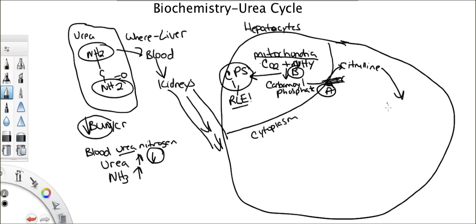Next thing. Citrulline turns to argininosuccinate. What enzyme converts this? It's argininosuccinate synthetase. I'm just going to abbreviate it here.